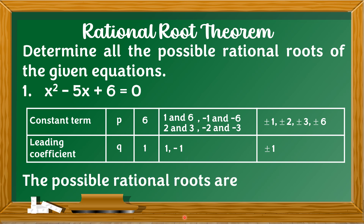The possible rational roots of the equation are: positive/negative 1 divided by positive/negative 1 equals positive/negative 1; positive/negative 2 divided by positive/negative 1 equals positive/negative 2; positive/negative 3 divided by positive/negative 1 equals positive/negative 3; and positive/negative 6 divided by positive/negative 1 equals positive/negative 6. Therefore, the possible rational roots of x squared minus 5x plus 6 equals 0 are positive/negative 1, 2, 3, and 6.